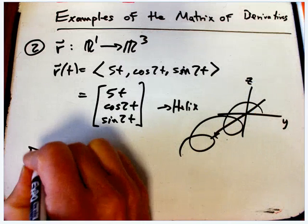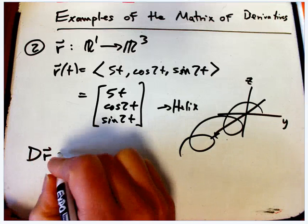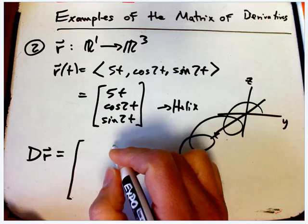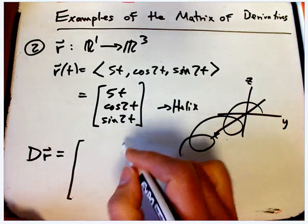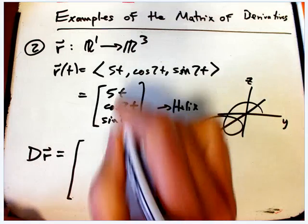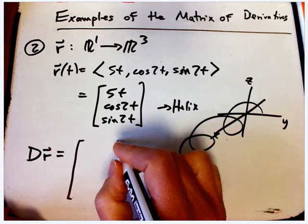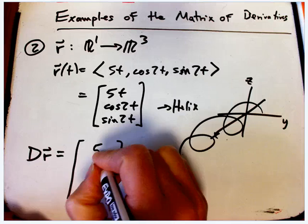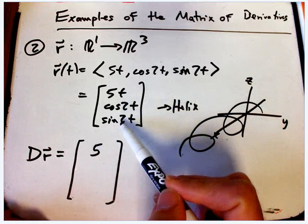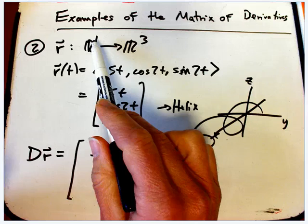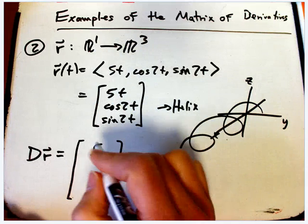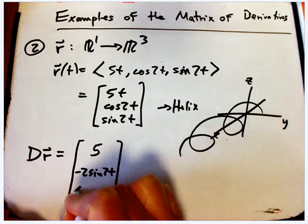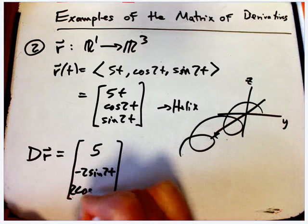And what is its matrix of derivatives? Just put a big D in front of it. And, of course, it's something that has the same shape as this, and that's why it's nice to write that as a column vector. And it's just going to be the derivatives. It's nothing more nor less than the velocity vector. You just differentiate all of these functions by all of the inputs. Well, there's only one input, so it's just the derivative, the ordinary derivative.